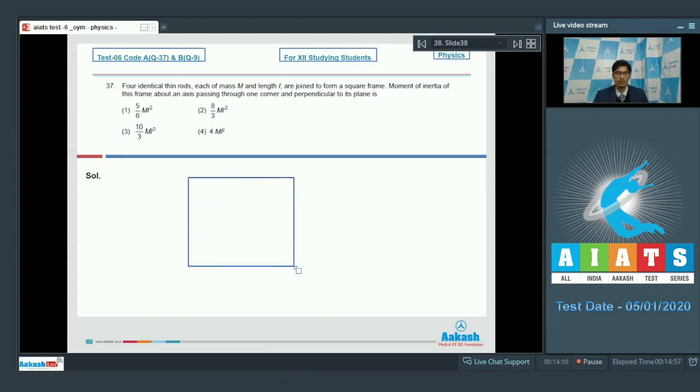Dear students, there is a square frame and we have to find out the moment of inertia about this axis. Let this be side 1, this be 2, this be 3 and this be 4. The moment of inertia of side 1 and side 4 would be equal and would be equal to ml square by 3. To find out the moment of inertia of side 3, we have to know the distance of center of mass from this corner.